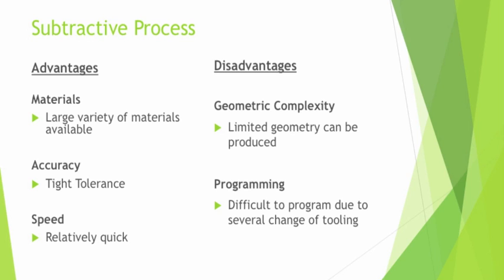For the disadvantages of the subtractive process: in terms of geometric complexity, a limited geometry is capable because the geometry you can fabricate is very much dependent on the tooling that you have. For programming, it is a bit difficult to program, especially in the automated subtractive process — also known as CNC — because there are many changes of tooling. You need one tool for rough cutting, another for final cutting, and probably a polishing tool to improve the surface finish.